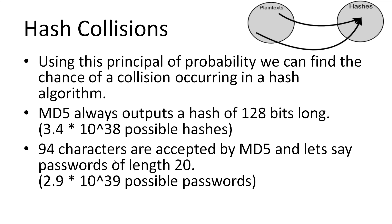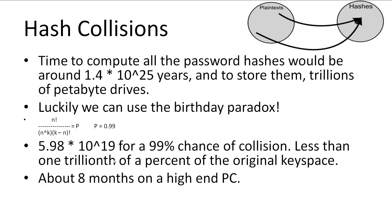Given that there are 94 characters — upper and lowercase letters, 10 numbers, and 32 symbols — that are accepted by MD5, and a password of at least 20 characters long, there are 3.4×10^38 possible hashes and 2.9×10^39 possible passwords. However, to generate every password hash would take roughly 1.4×10^25 years. And worse, we'd have to store every hash we compute and compare it to all other hashes — this would take trillions of petabyte hard drives.